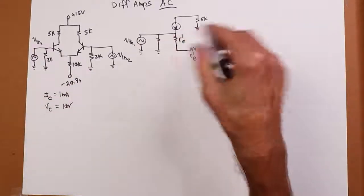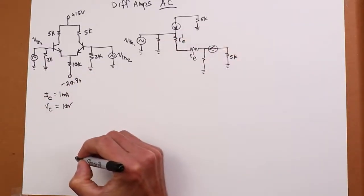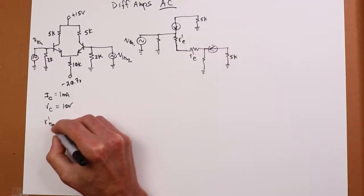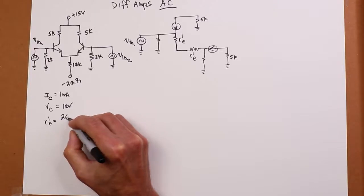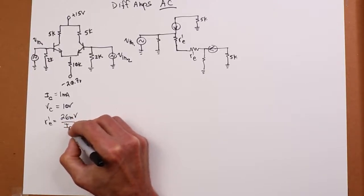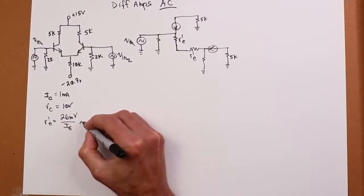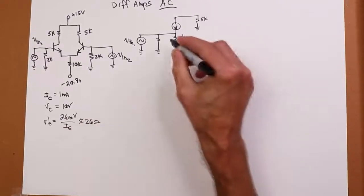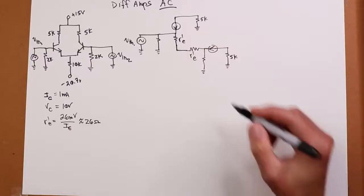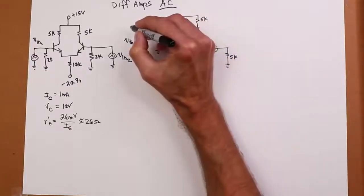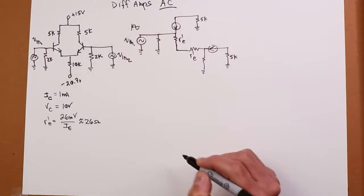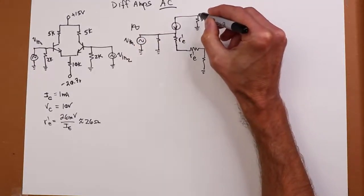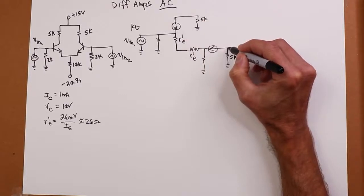Before we launch into this, we need to know R'E. R'E is always 26 millivolts over IE, and IE and IC are approximately the same, so that's roughly 26 ohms. So my first question is: if I have a sine wave coming in, what do I get on this collector and on that collector?